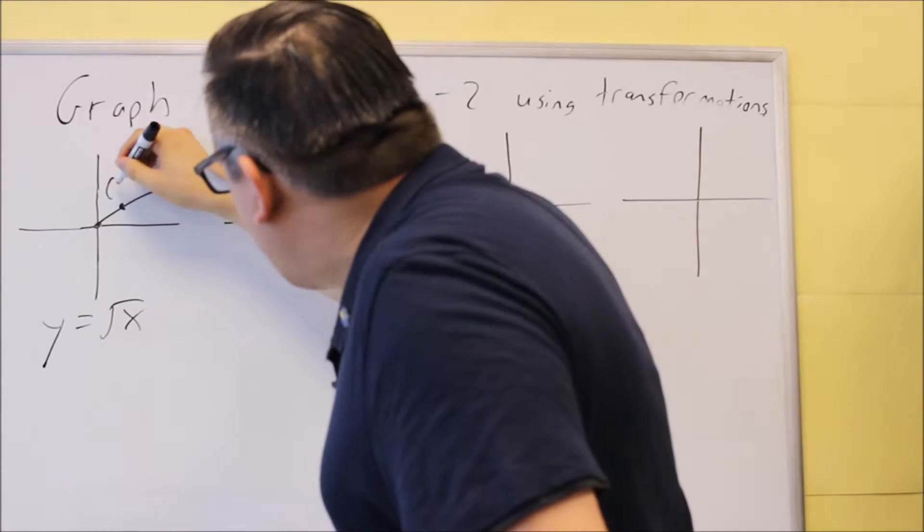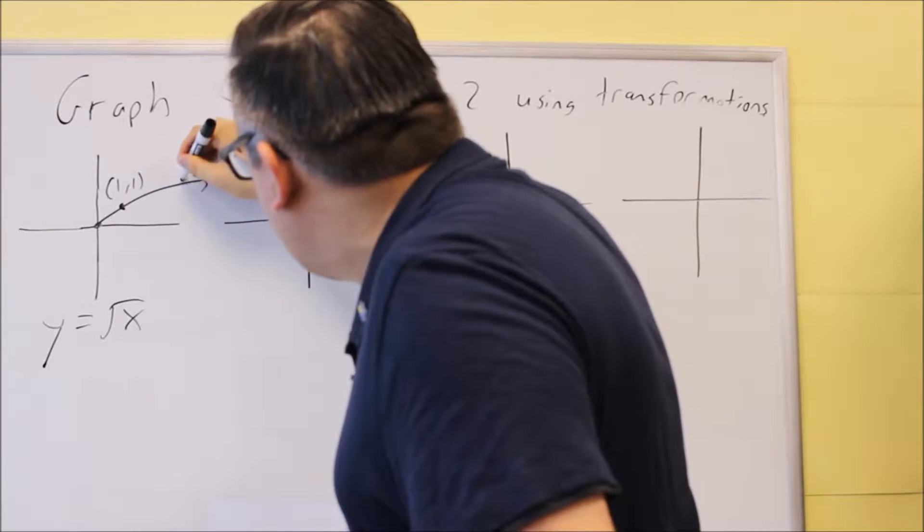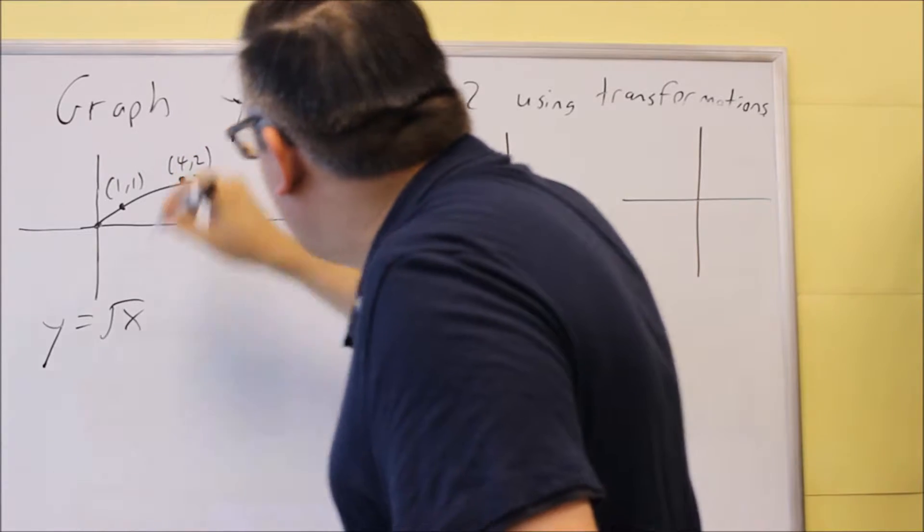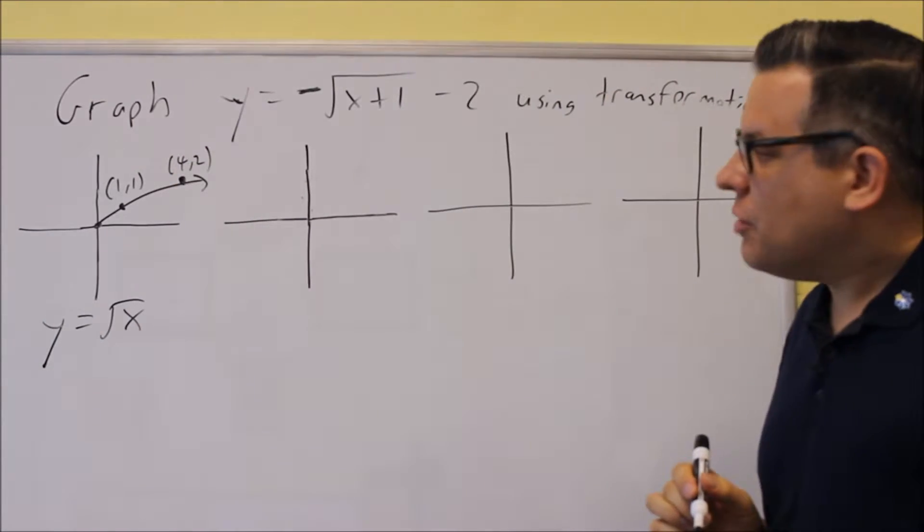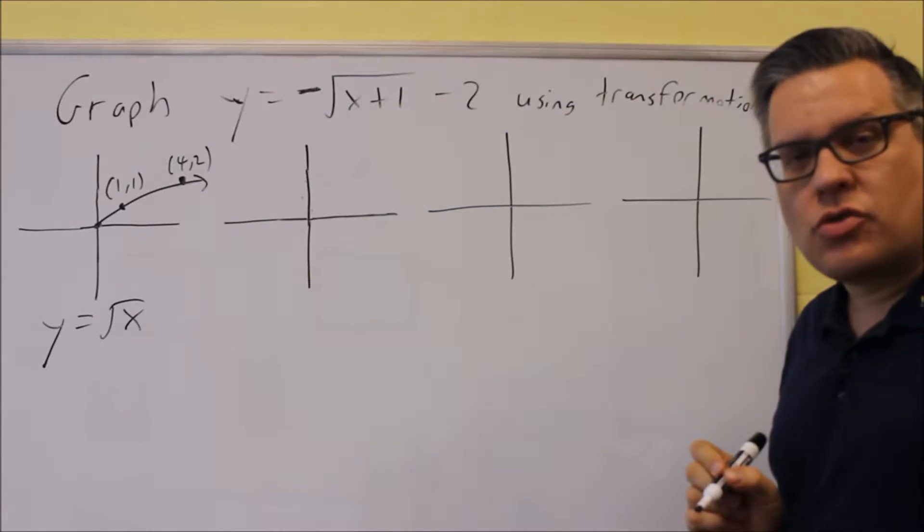Now we also have some key points here. This is 1, 1. And right here we've got 4, 2. So those are our two key points that are on there. Then of course it goes through 0, 0.